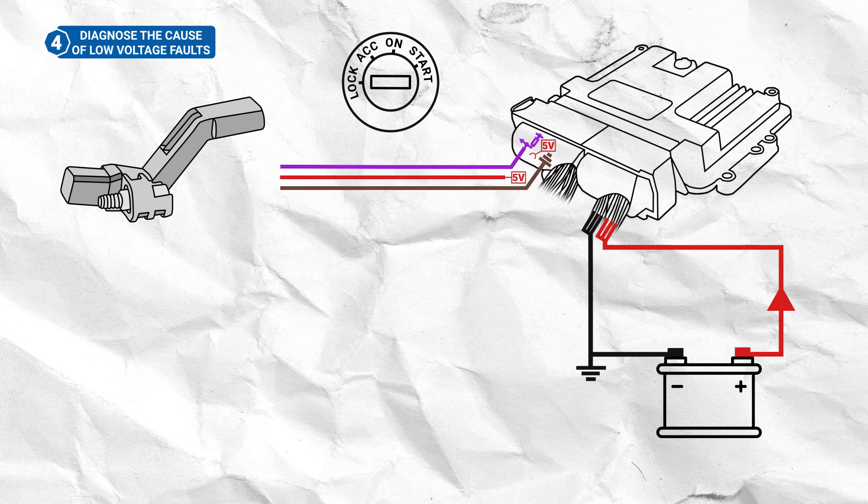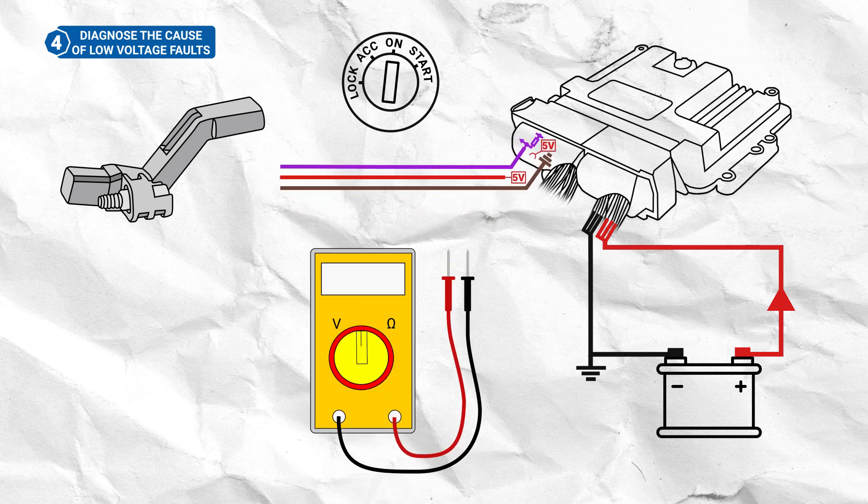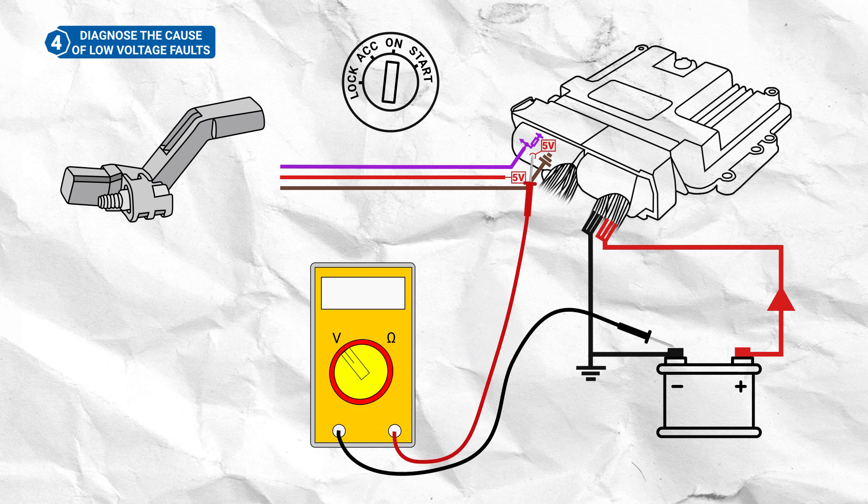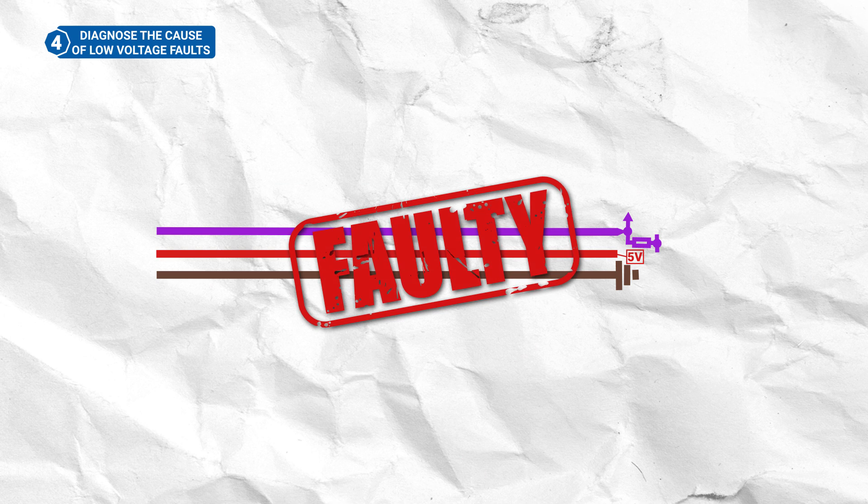Plug the connector back in, turn the ignition on and retest at the ECU connector. If the reading is now good, then there is a fault within the wiring loom, which will need to be repaired.